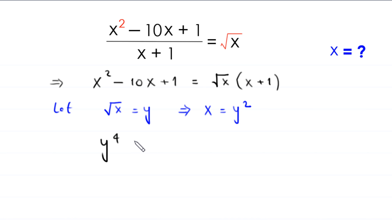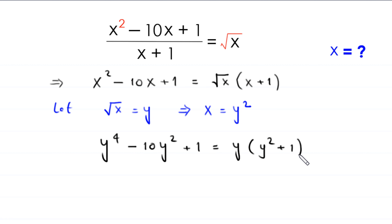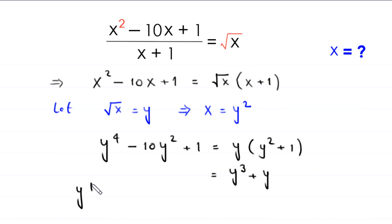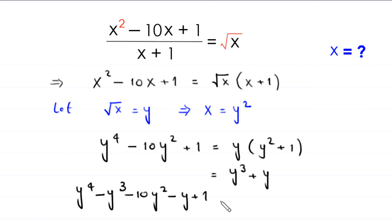So this equation will become y⁴ - 10y² + 1 = y(y² + 1). Simplifying the right-hand side: y · y² = y³ and y · 1 = y. Moving these terms to the left and rearranging gives y⁴ - y³ - 10y² - y + 1 = 0.